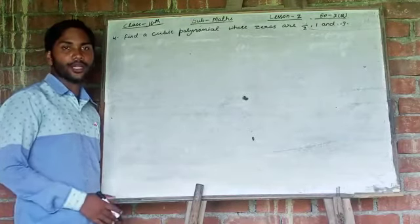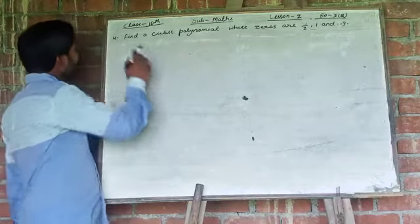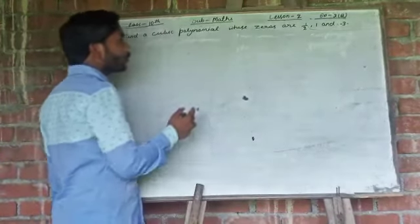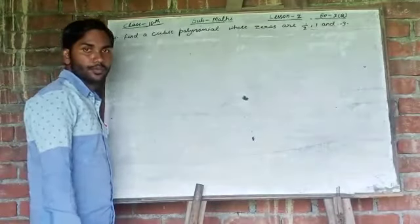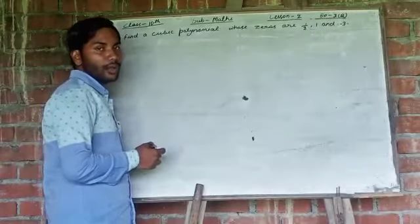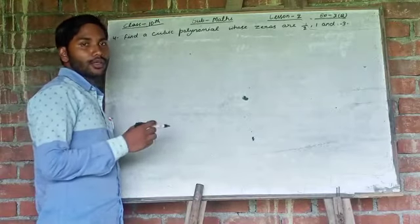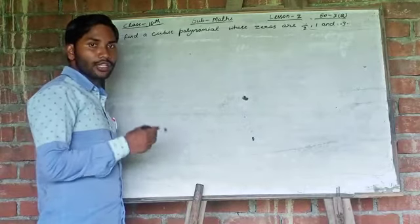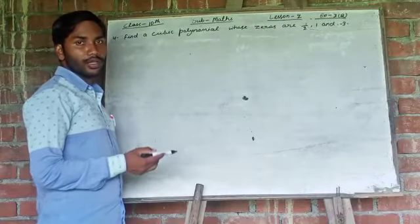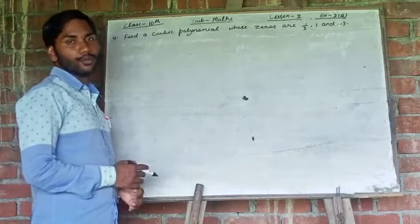For this, I have taken one question from your exercise 2B, which is question number 4. Find a cubic polynomial whose zeros are 1 by 2, 1 and minus 3. So 3 zeros of cubic polynomials are given. I have told you that in quadratic polynomial there will be 2 zeros, in cubic polynomial there will be 3 zeros and in bi-quadratic polynomial there will be 4 zeros. Means zeros are equal to the degree of the polynomial.